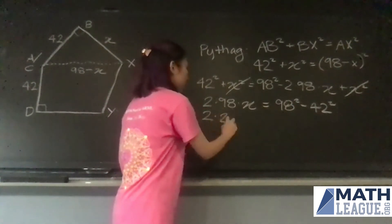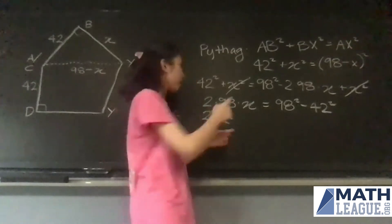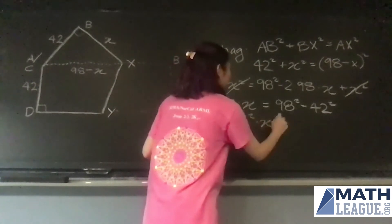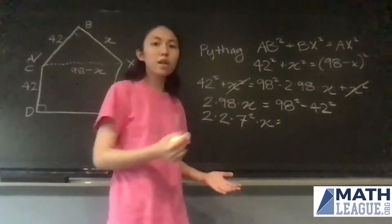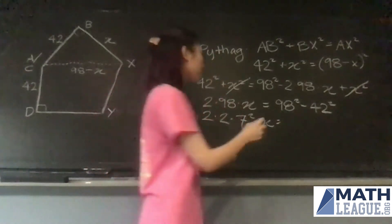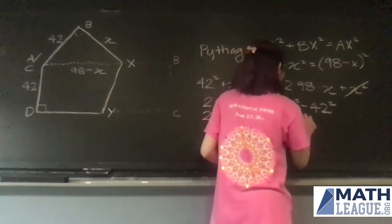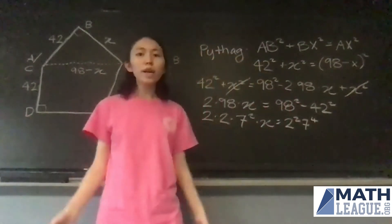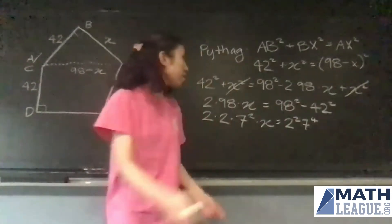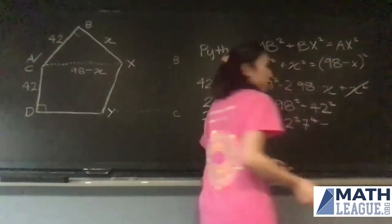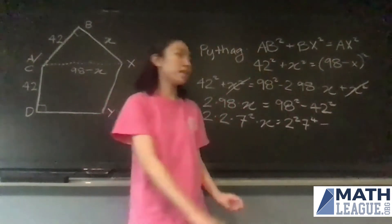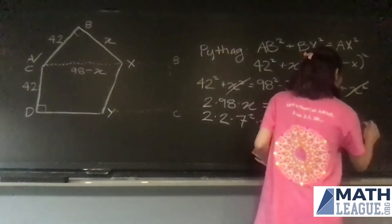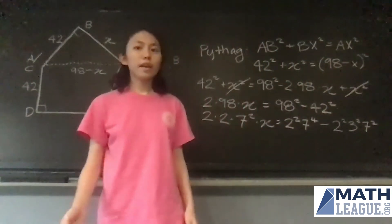So we have 2 times 2 times 7 squared times X is equal to 98 squared, so that's 2 squared times 7 to the fourth, because 2 times 7 squared quantity squared is 2 squared times 7 to the fourth. And then 42, which is 2 times 3 times 7, we square that and it's 2 squared, 3 squared, 7 squared.